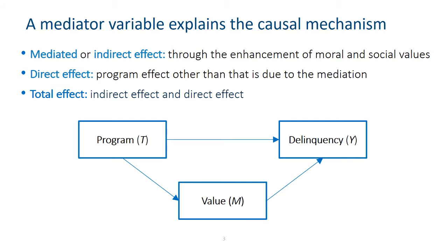The treatment effect through the mediation process is called the mediated or indirect effect. In the last example, the enhancement of moral and social values of teenagers describes a mediation process. Notice that a direct arrow from program to delinquencies remains here. This represents the direct effect of the treatment on the outcome — more accurately, this is the part of the treatment effect that is not due to the specified mediation process. Finally, the total treatment effect includes both the mediated effect and the direct effect.